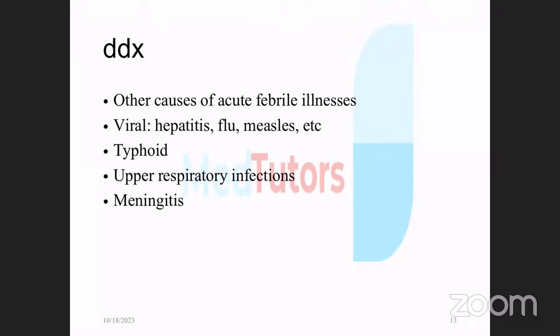Differential diagnoses include any disease causing fever, body pains, jaundice, or body weakness — febrile illnesses in general. Hepatitis in its early stage may present similarly. Salmonella is a very good differential — many patients with salmonella actually have malaria. Upper respiratory tract infection and meningitis are also differentials, especially if the patient presents with CNS symptoms, as it can be difficult to differentiate meningitis from cerebral malaria.